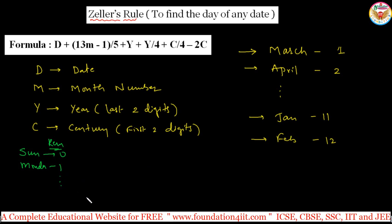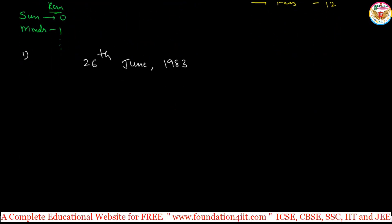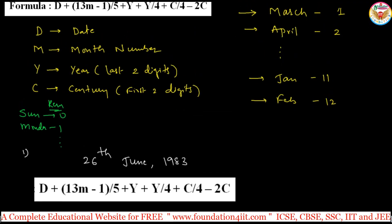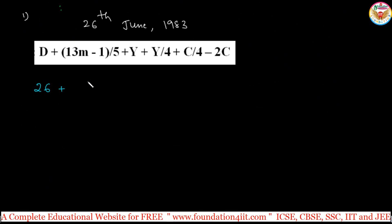Let's start with the first example. Take the date 26th June 1983. You can check with any number of dates. Let me rewrite the formula: d + ⌊(13m − 1)/5⌋ + y + ⌊y/4⌋ + ⌊c/4⌋ − 2c. Here d is 26. For m, remember we start with March: March=1, April=2, May=3, June=4. So m = 4.